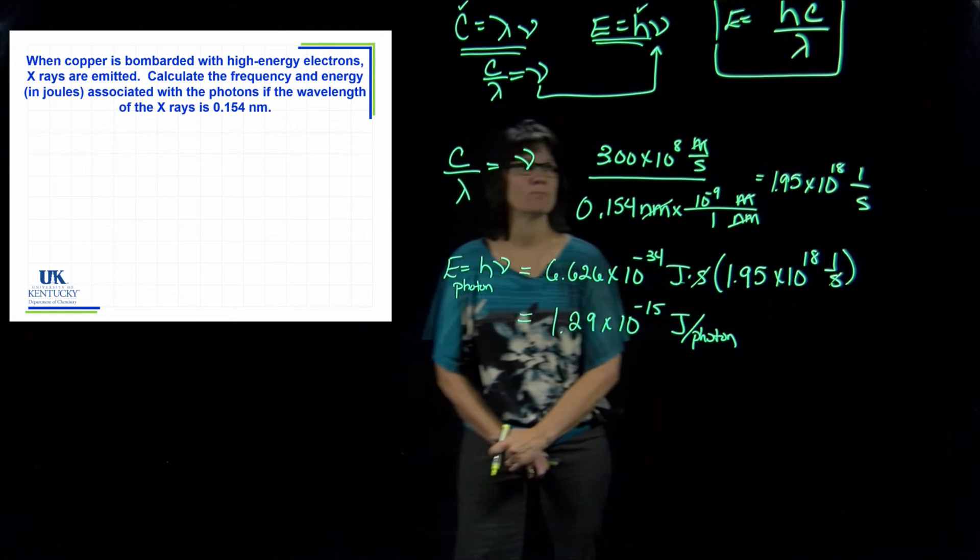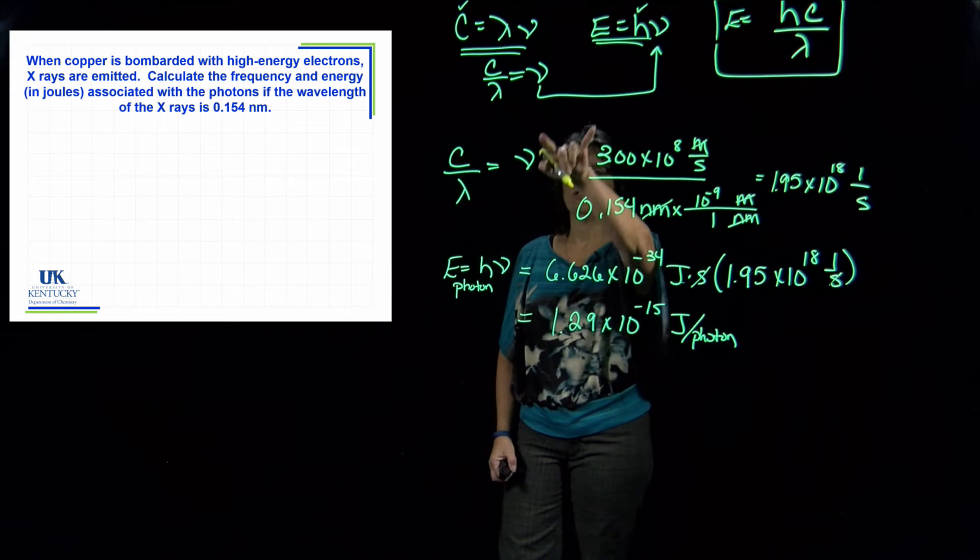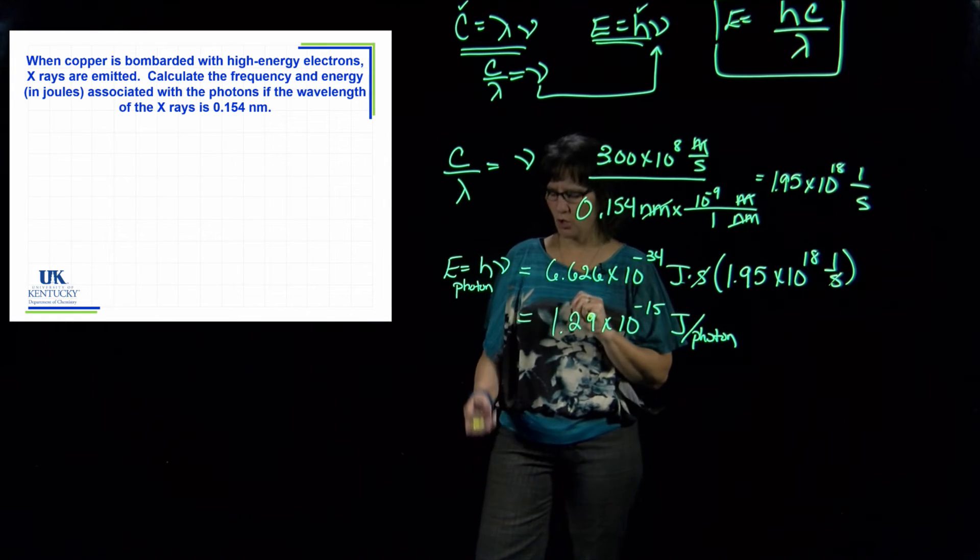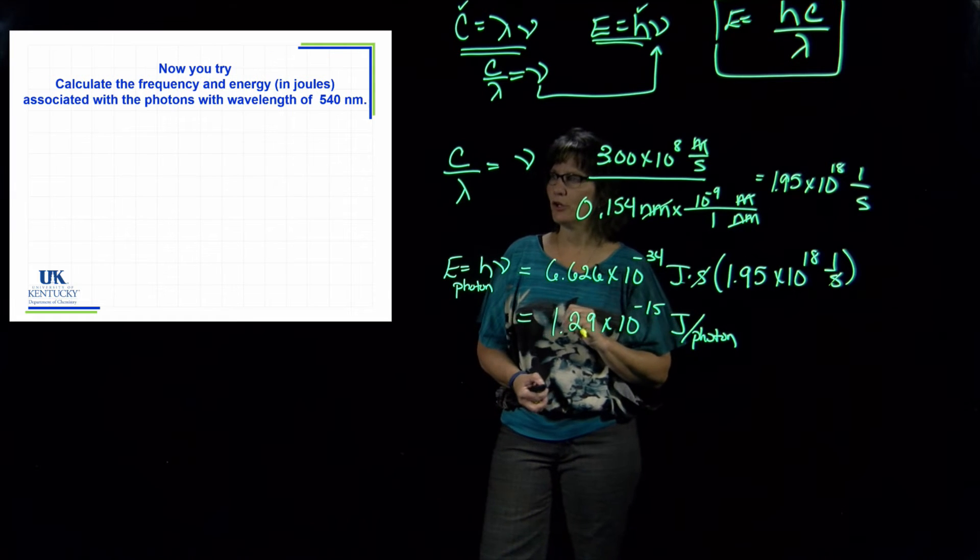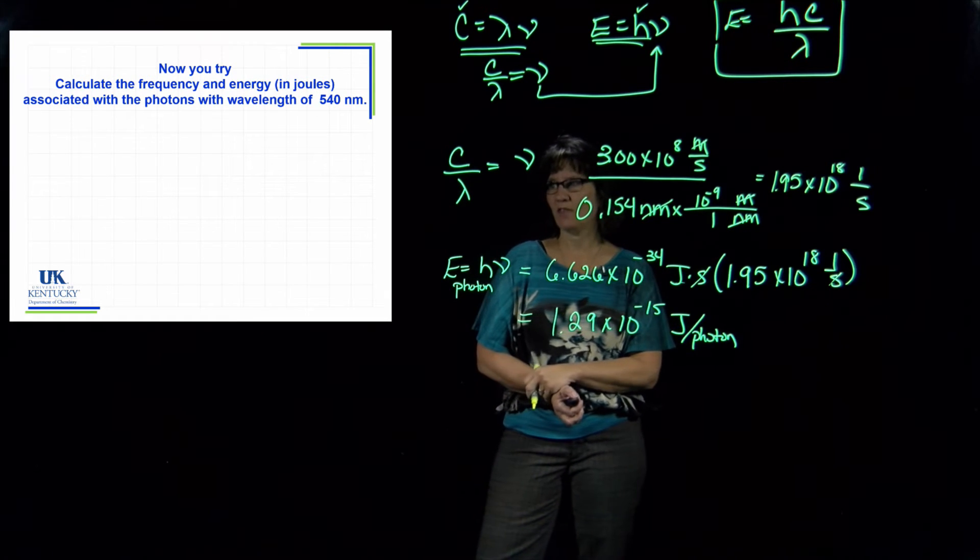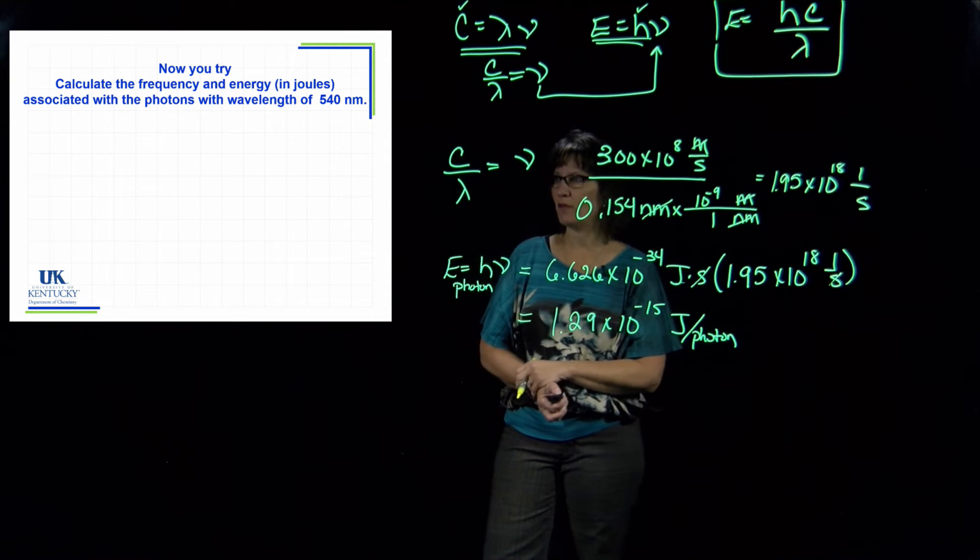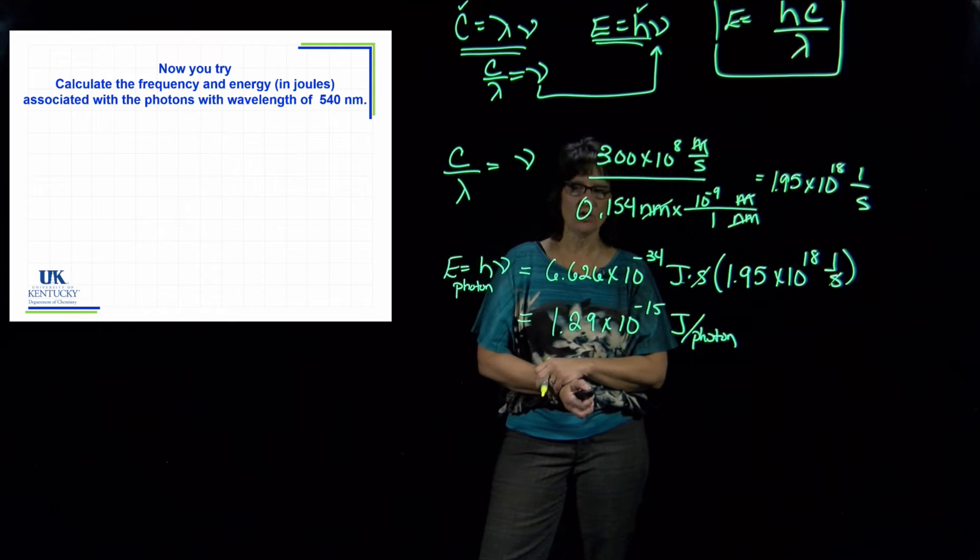So how to use two equations to convert between the three variables: if you're given one, you can get the other two. Now you're going to try it for this one. You're going to take the wavelength given to you there and you are going to try to determine the frequency and the energy of that photon.